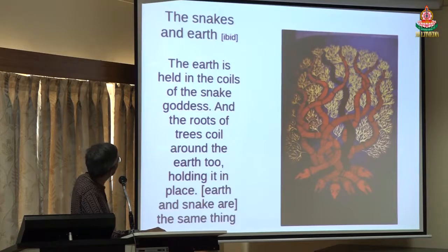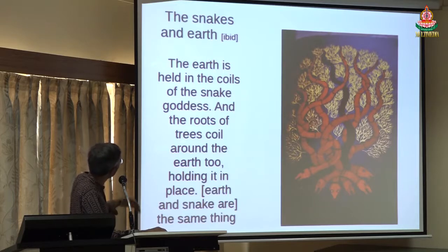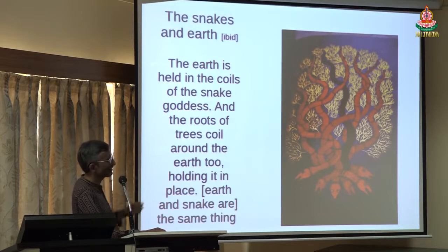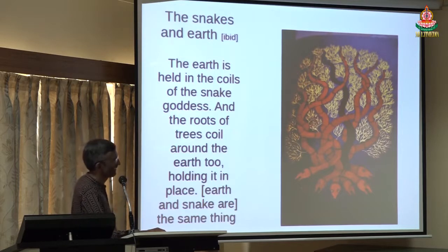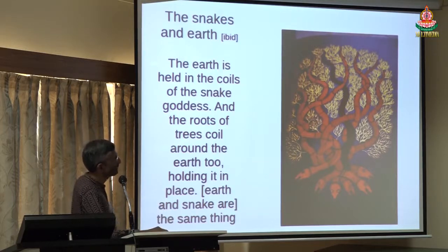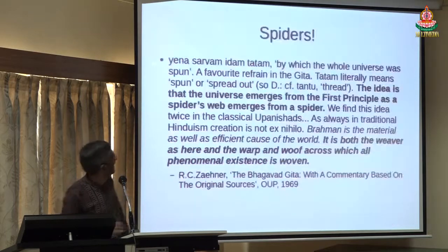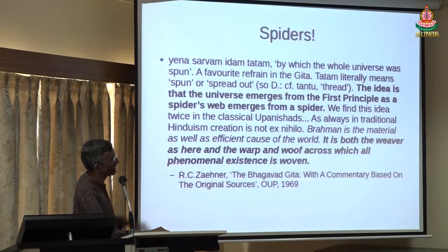In the same book, you'll see interesting pictures of snakes and the earth. The earth is held in the coils of the snake goddess, and the roots of the trees coil around the earth too. The earth and the snake are the same thing — the thinking is colored with certain images of nature itself. There is a deep interconnection between thinking and nature, and this carries on to many other areas.